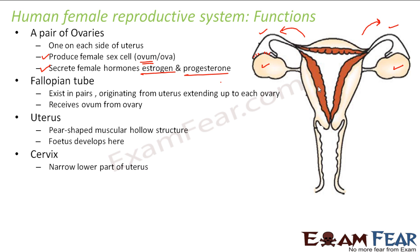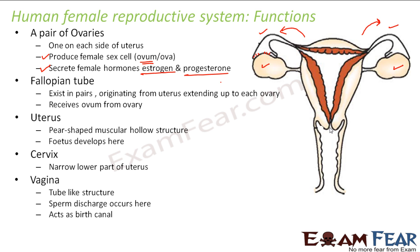Next is the cervix, which is the narrow lower part of the uterus. Then there is the vagina, which is a tube-like structure where sperm discharge occurs. It also acts as the birth canal. During intercourse, the penis gets inserted into the vagina and the sperms are secreted here — this is how sperms enter inside the female body. When the baby is ready to be born after nine months, it comes out through this vagina, which is why it is also known as the birth canal.